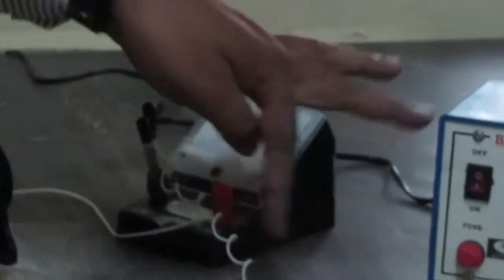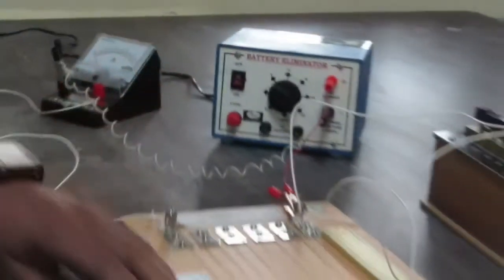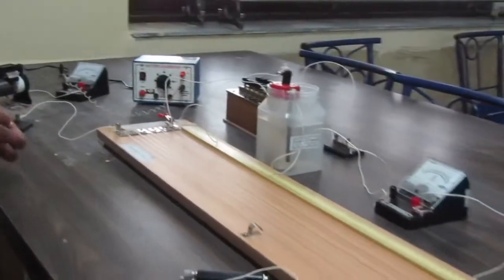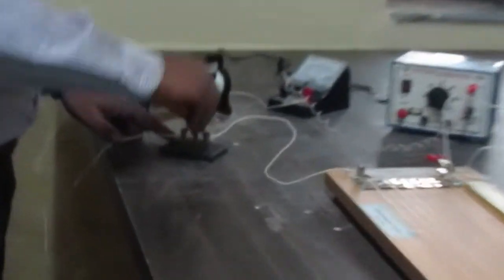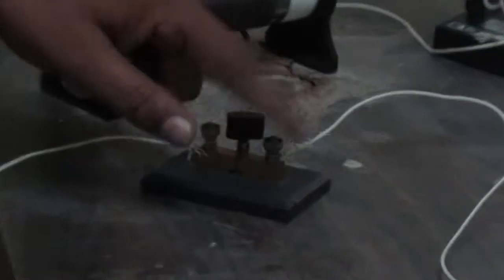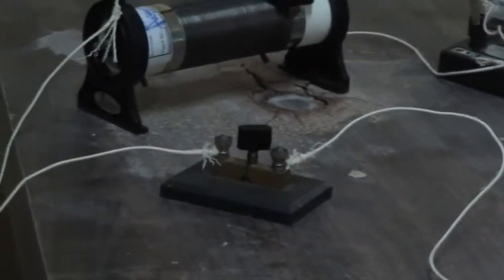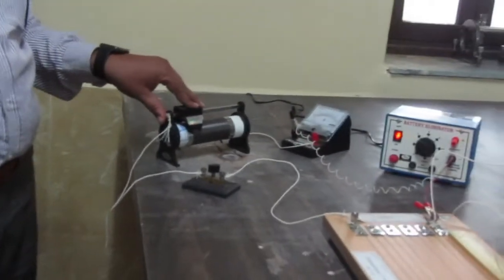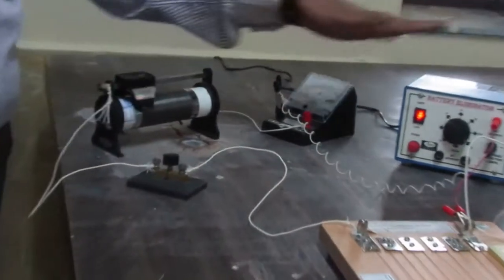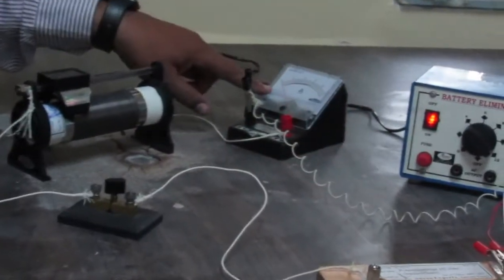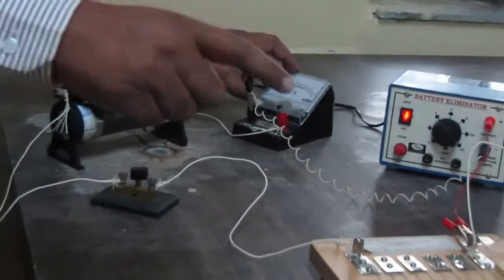So this is the complete circuit. Now there are two things: this key can be closed or open. When we turn on the battery, we set the maximum value of the resistance so that you can avoid maximum current in this cell.